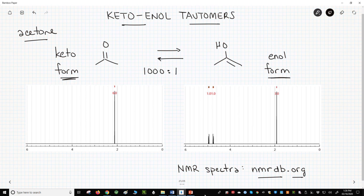On the bottom of the screen are simulated proton NMR spectra of the keto and enol tautomers of acetone, respectively. These spectra were generated by a great website called nmrdb.org.